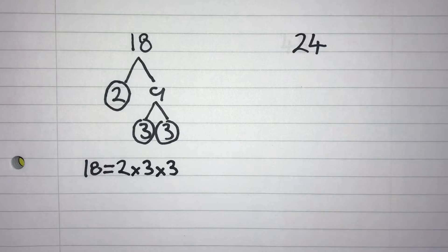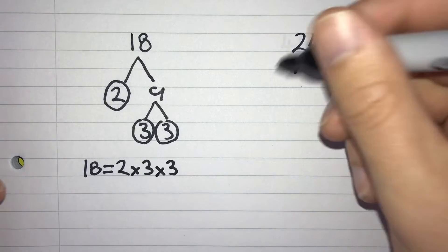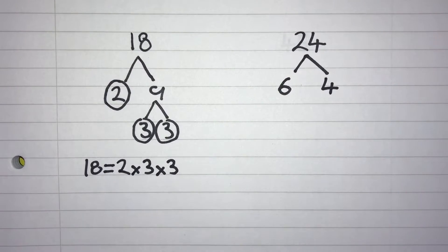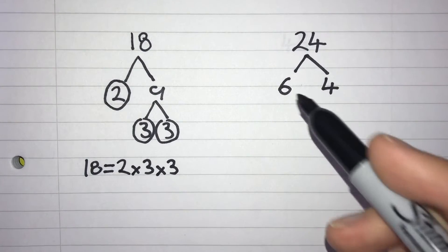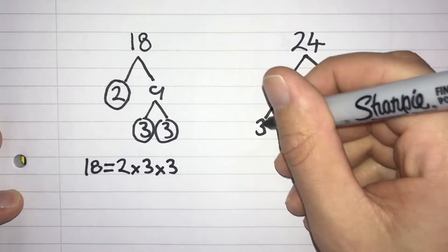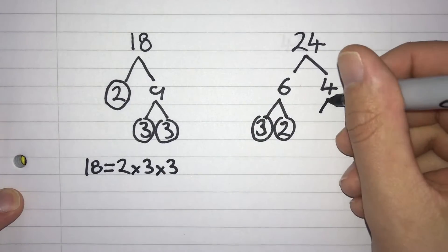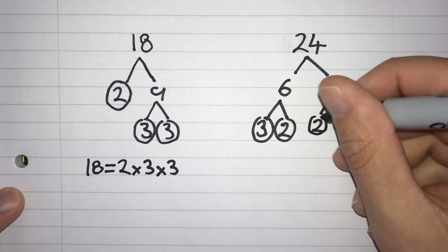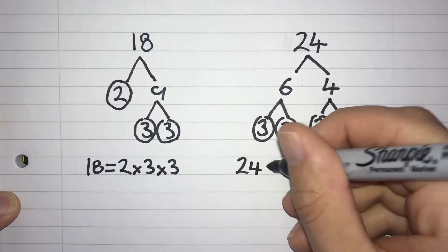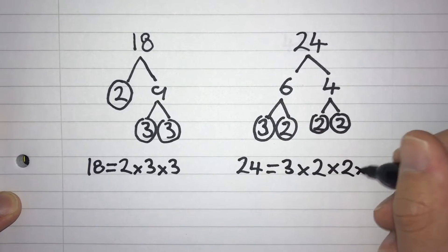Now let's do the same with 24. Let's split 24 up into two numbers we can multiply together to make 24 — let's go for 6 and 4. We could have picked 3 and 8, or 12 and 2; it would have been exactly the same and we would have got the same answer overall. Now 6 is not a prime number; we can split 6 into 3 and 2, and both of those are prime numbers. And we can split 4 into 2 and 2, and those 2s are also prime numbers. So 24 can be written as 3 times 2 times 2 times 2.